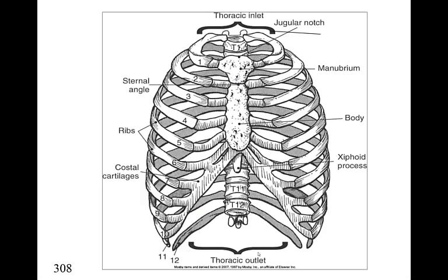The beginning of the chapter talks about the bony thorax, which is fairly review for everybody. It talks about the 12 ribs. You have the sternum and the different parts of it: the manubrium, body, and xiphoid process. It also explains the thoracic inlet and thoracic outlet, which helps us understand how a CT image would look at the thoracic inlet versus the thoracic outlet.